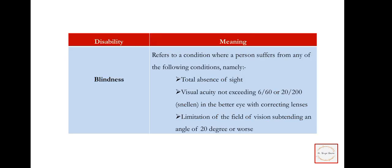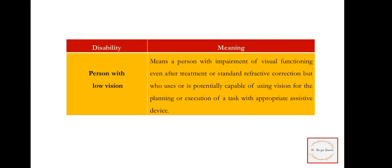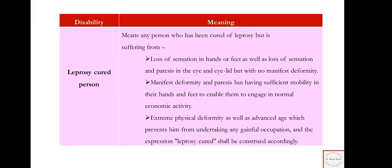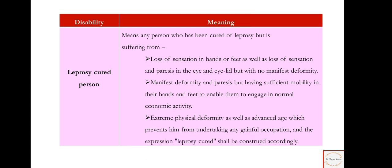Blindness — the person does not see; there is low vision or complete blindness. Person with low vision means a person with impairment of visual functioning even after treatment. Leprosy cured person means any person who has been cured of leprosy but is suffering from loss of sensation in hands or feet, manifest deformity and paresis, or extreme physical deformity. These are the different types of disabilities I was explaining from the start of this video.